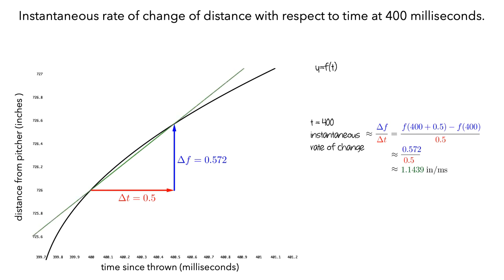If we extend the line a bit, we can see that this green line is not exactly the same as the black graph. This is because the green line would model an object that is traveling at a constant speed, whereas the graph of f shows that the speed of the ball is decreasing.